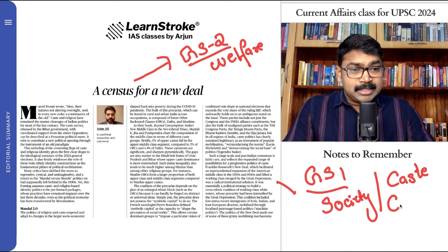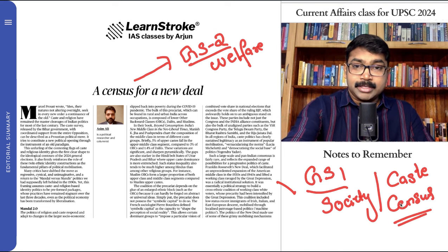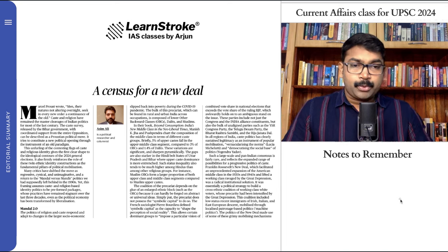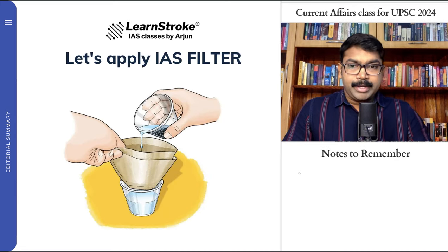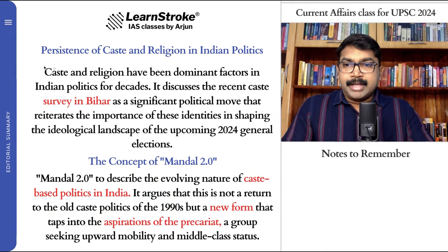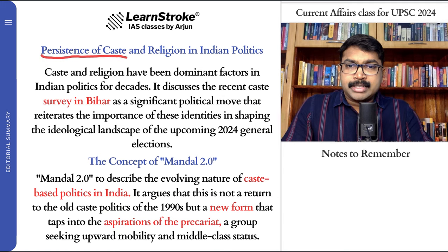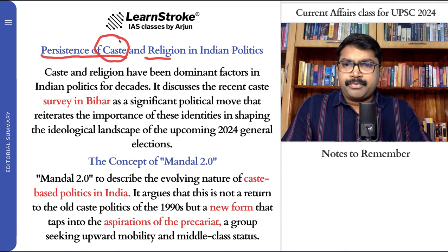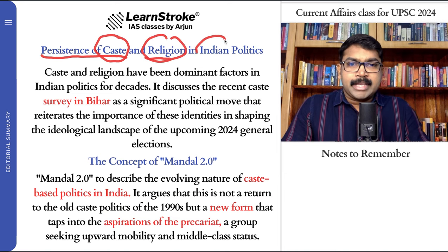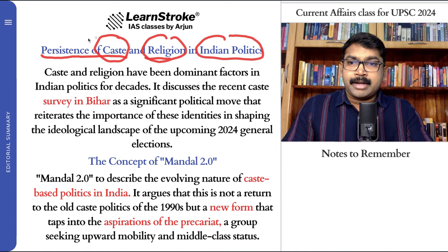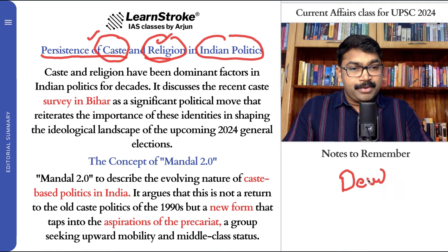The caste census which has happened now has created a lot of issues. The article clearly talks about the persistence of caste and religion in Indian politics — the biggest vote bank has always been caste and religion. We believe that you should vote for people who will give you development, progress, and growth.